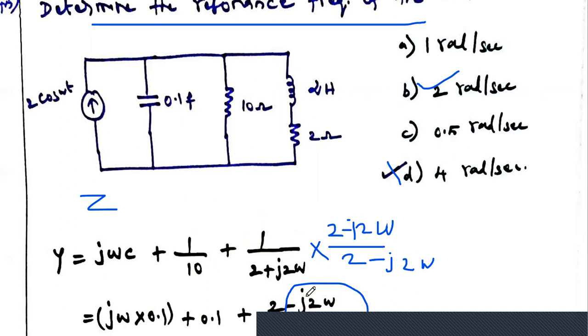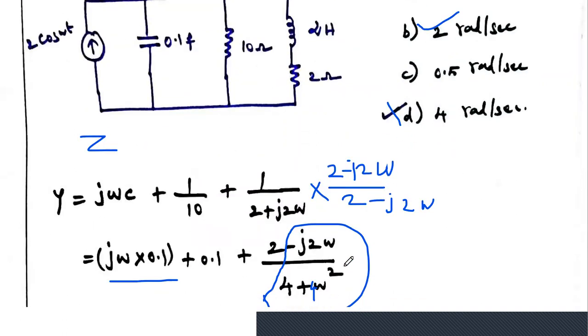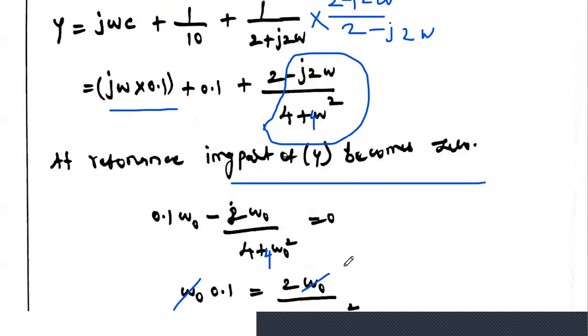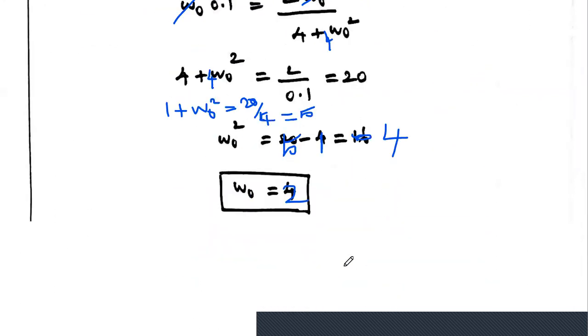Note: the impedance of the branch is 1/(2 + j2ω). This confirms the correct answer for the resonance frequency.